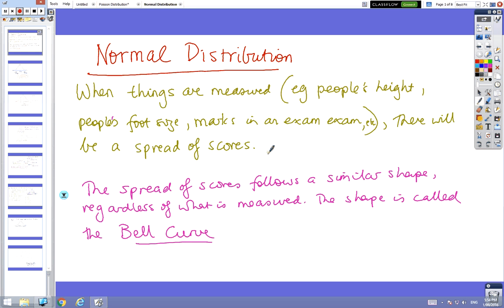Okay, so we're looking at the first part of the normal distribution. This applies to anything that can be measured basically, so people's heights, foot size, whatever.